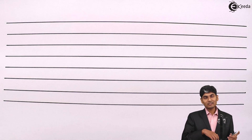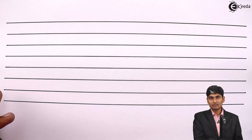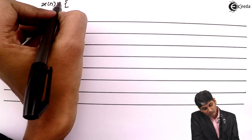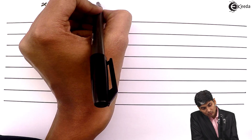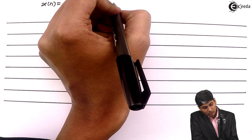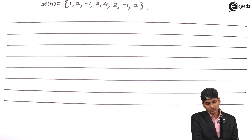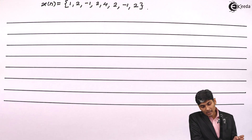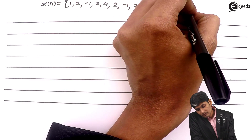Hi friends, let us see how to implement a DIF FFT flow graph on a given problem. Let us consider a problem where x of n equals 1, 2, minus 1, 2, 4, 2, minus 1, and 2. These are the 8 sequences given to us and they might ask you to find x of k.